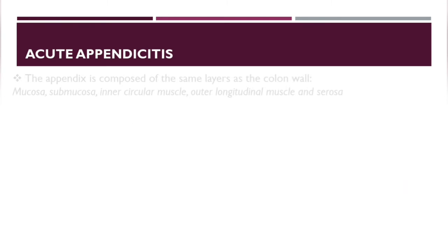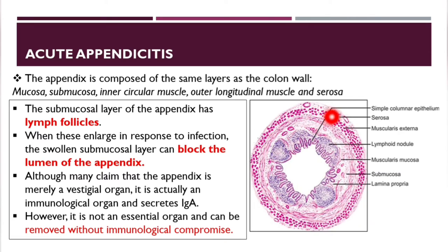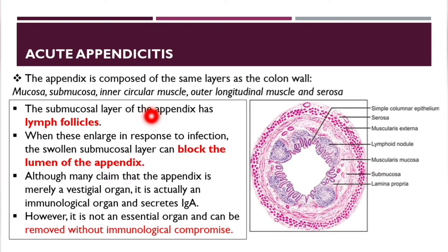The appendix is composed of the same layers as the colon: mucosa, submucosa, inner circular muscle, outer longitudinal muscle, and serosa. The most important feature is the lymphoid tissue — the submucosal layer contains lymphoid follicles. When these enlarge in response to infection, the swollen submucosal layer can block the lumen of the appendix.